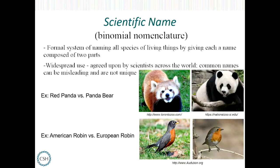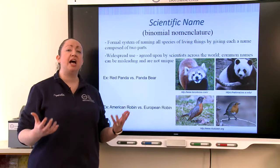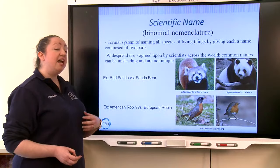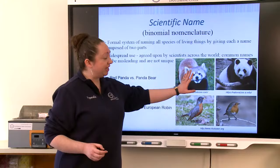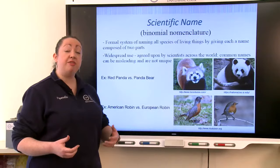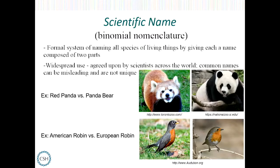Why do we assign a scientific name as opposed to a common name? Scientists agree upon widespread naming because common names can be very misleading. For example, the red panda and the giant panda are both named panda and share some characteristics — they're native to Asia and have a diet primarily of bamboo — but they come from two separate families, and some scientists argue the red panda is more closely related to a raccoon than to a panda bear.